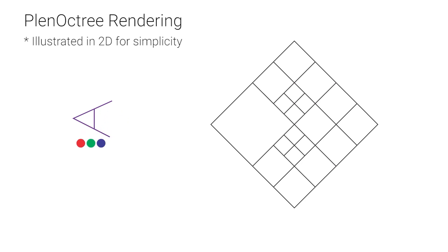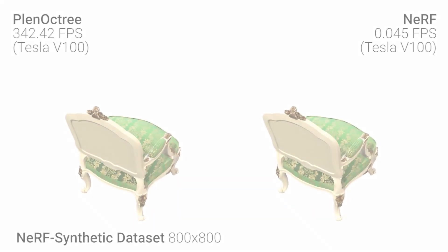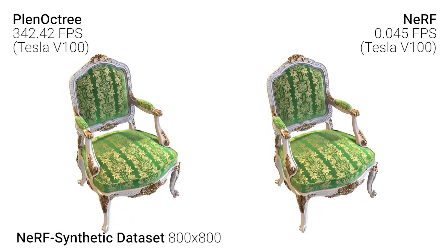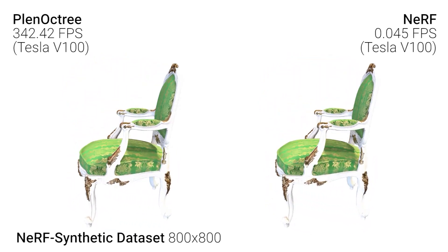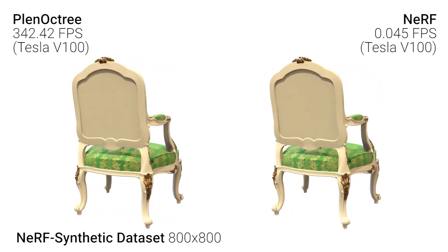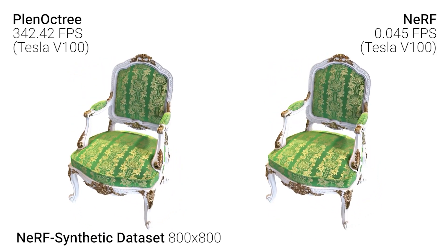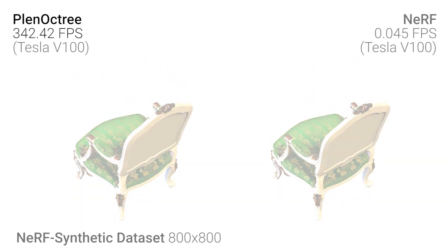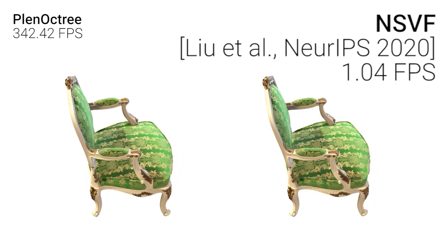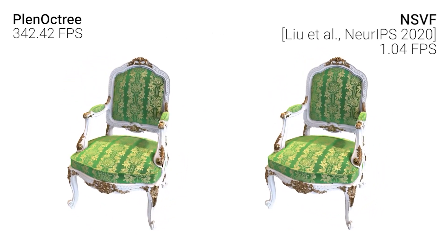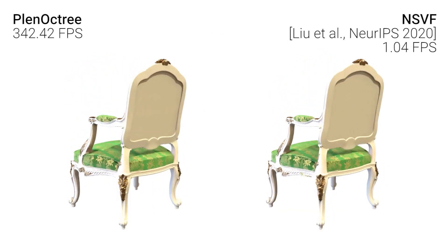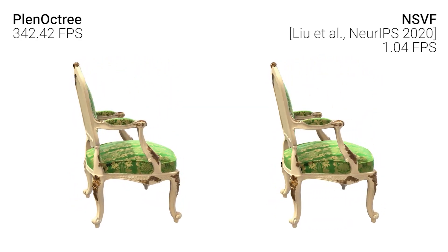By rendering and comparing with the NeRF training images, we can fine-tune the tree to further improve the quality. We obtain images perceptually similar to NeRF, both visually and in terms of image quality metrics. At the same time, our rendering speed is dramatically faster than Neural Sparse Voxel Fields, a neural method using sparse voxel grids to guide NeRF sampling.